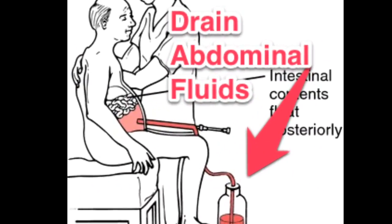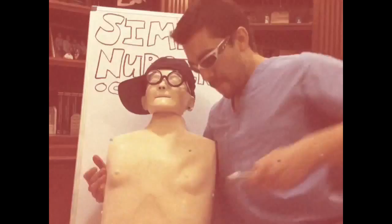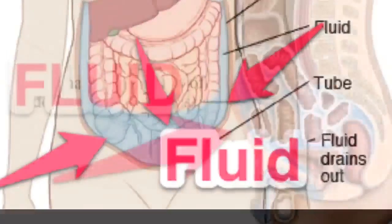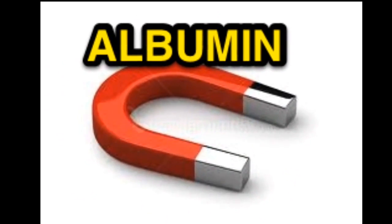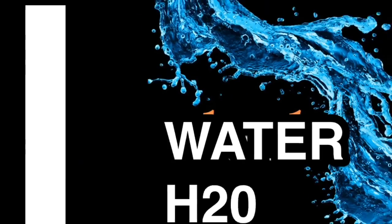It's beginning to look a lot like cirrhosis — soon we'll do a paracentesis. Drain the fluid from the abdomen, then give albumin to bring the fluid back into the vascular spaces.